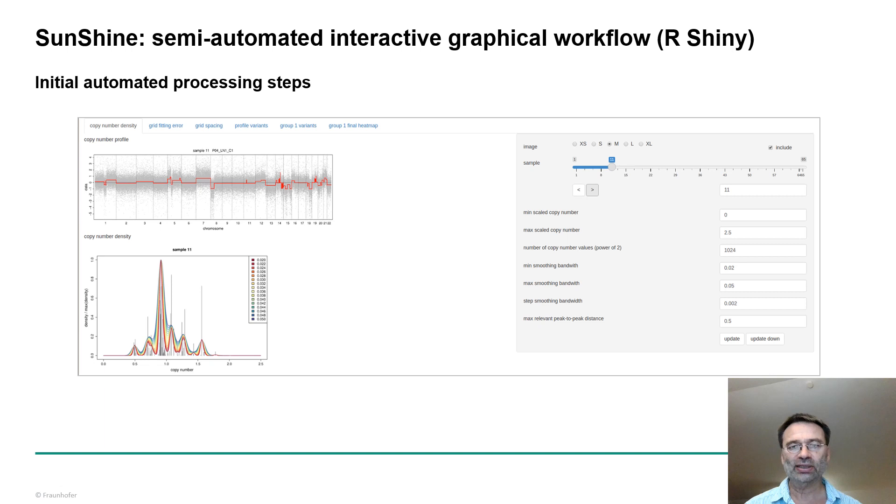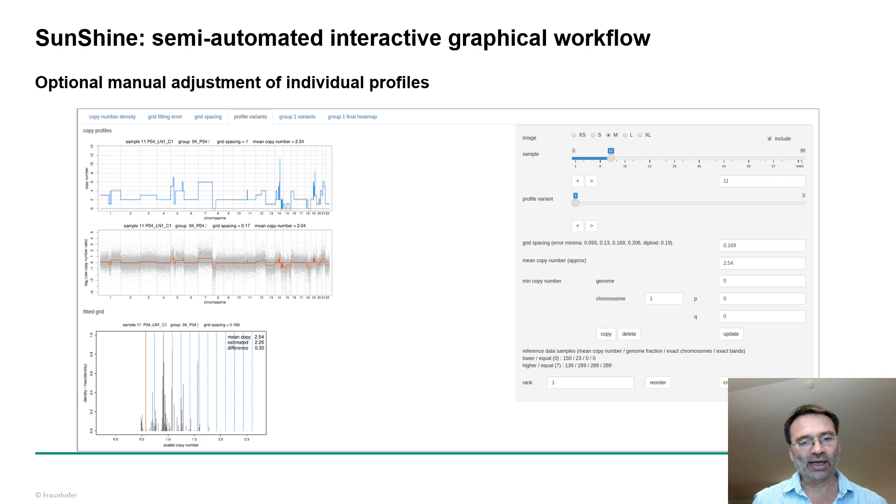So to solve this we developed this tool Sunshine in R Shiny, and this tool comprises four initial steps which are fully automated and have some parameters which you can adjust and control the results, but basically it's batch processing that processes a series of experimental data automatically. Then after that the result is presented. The blue line in the upper image is then the inferred absolute copy numbers and the lower image shows the grid fitted to the histogram.